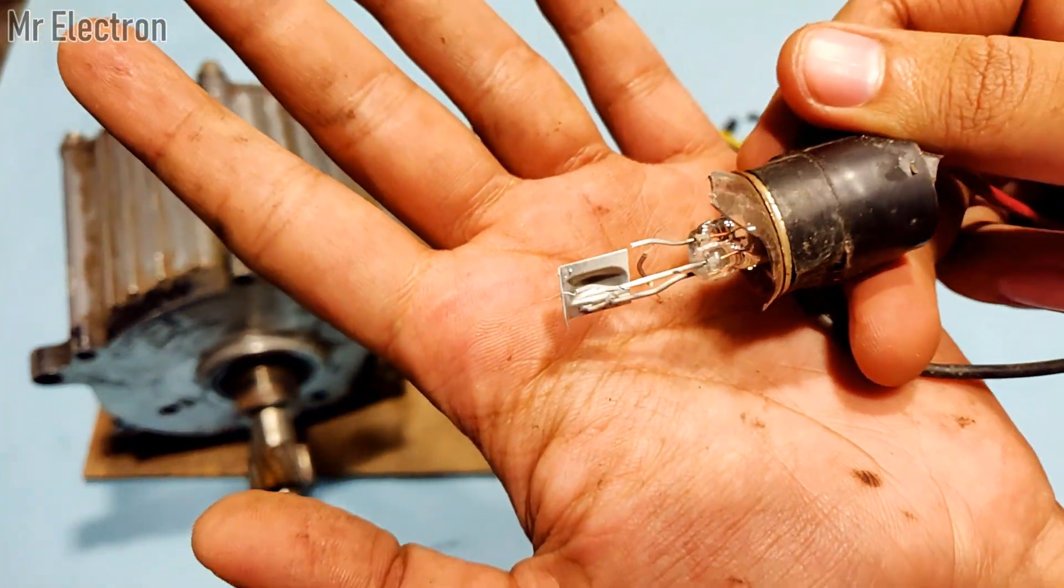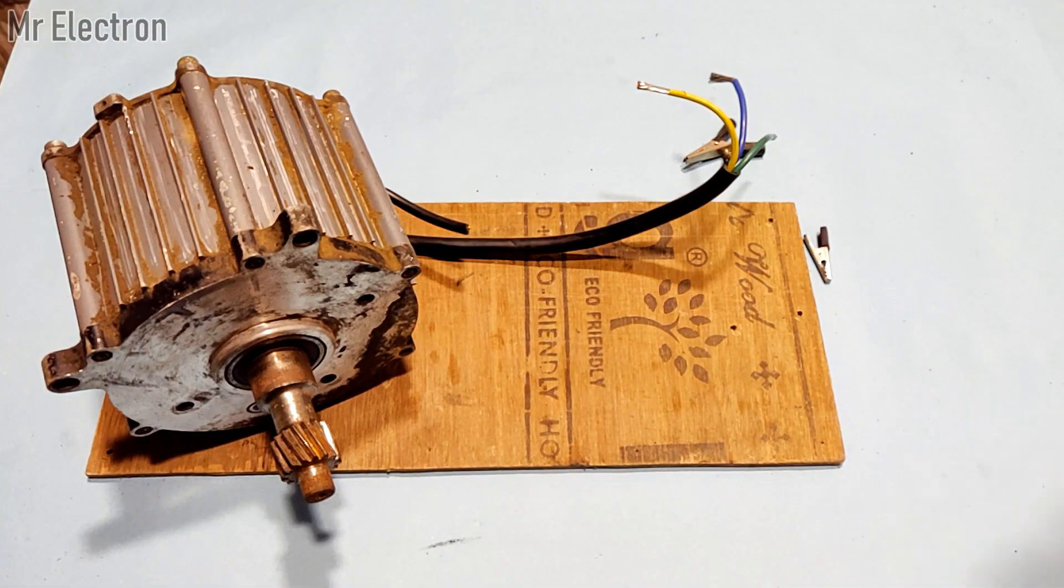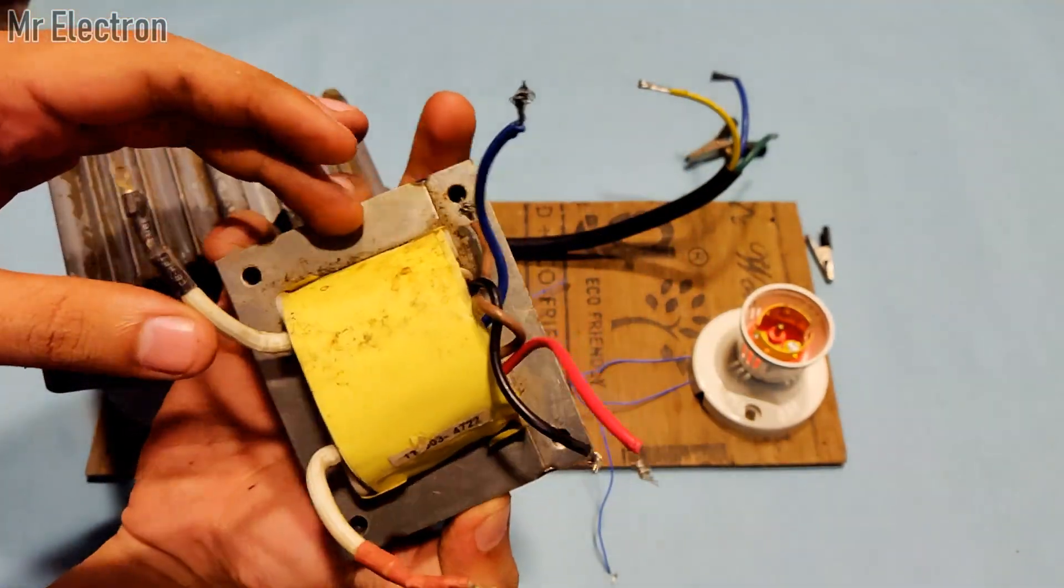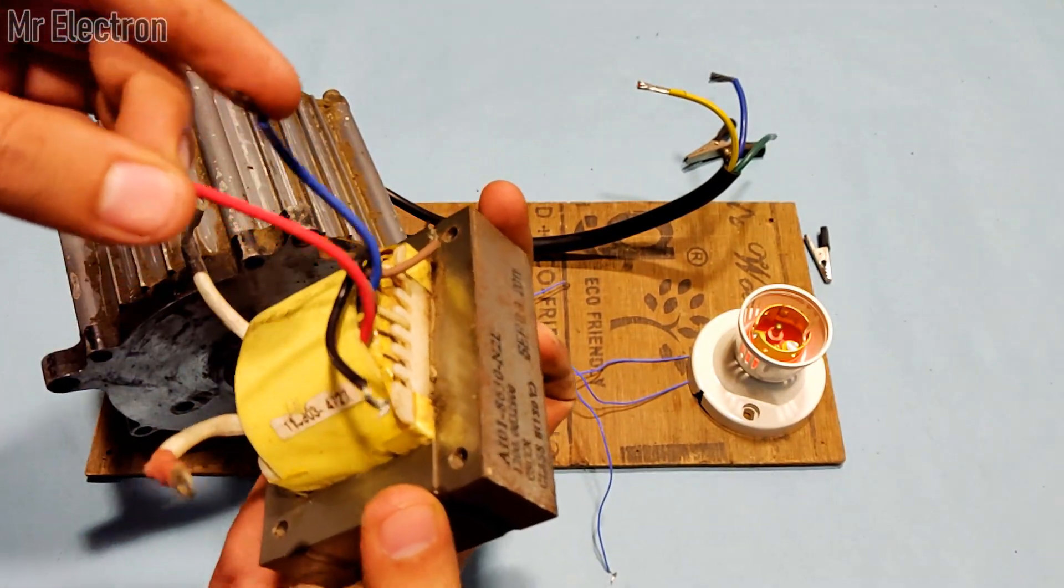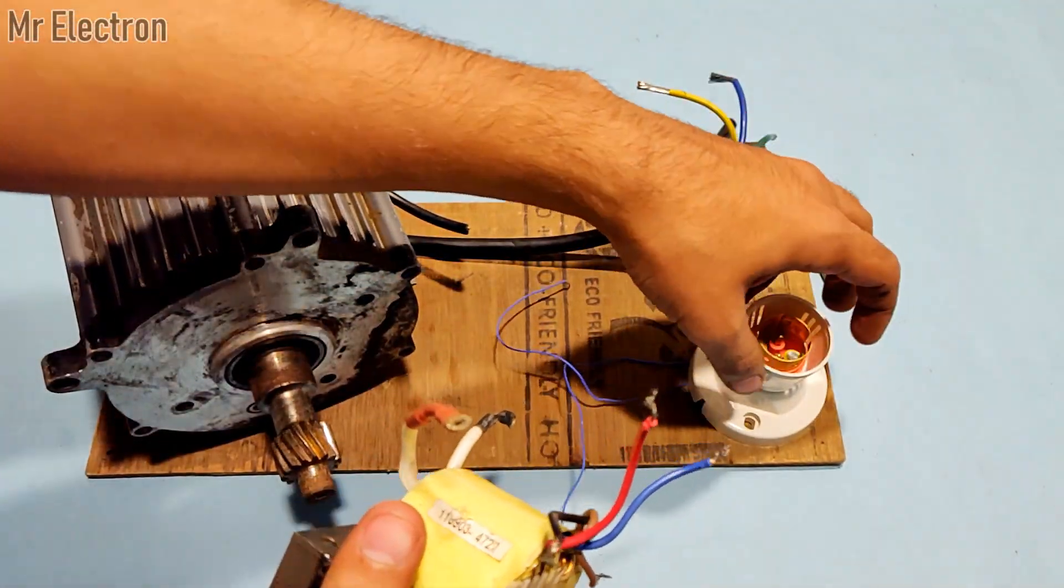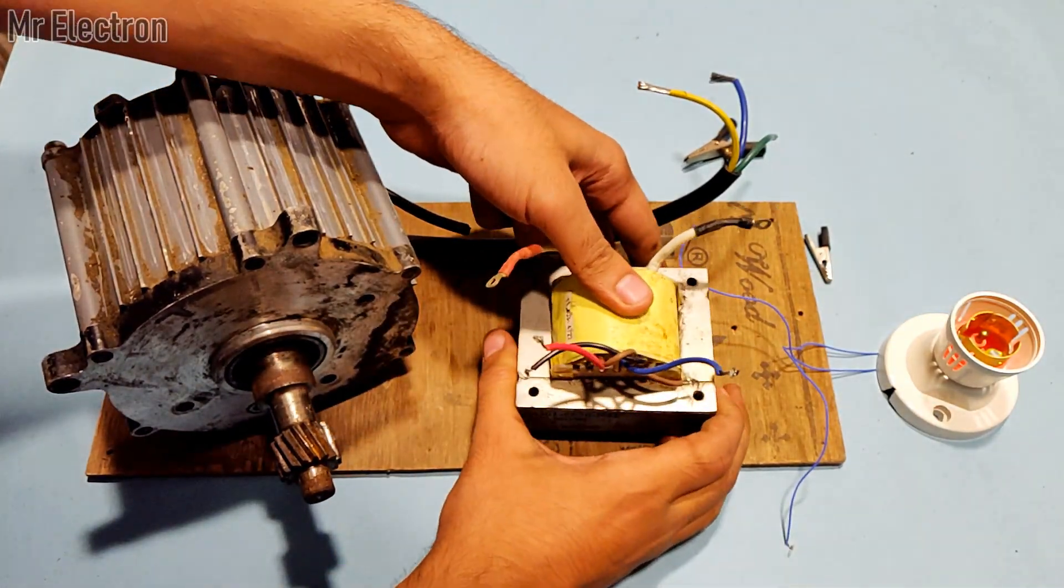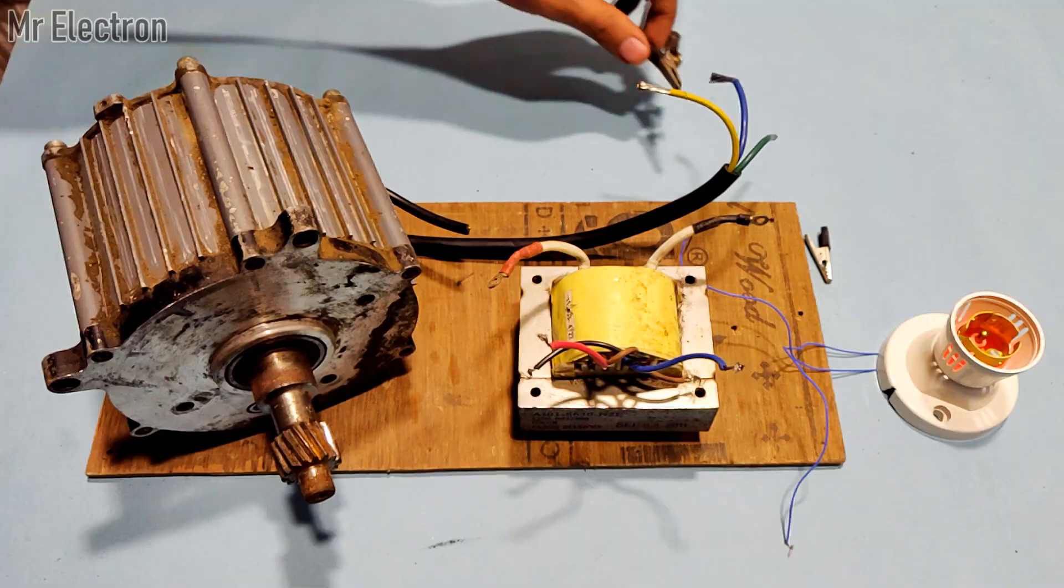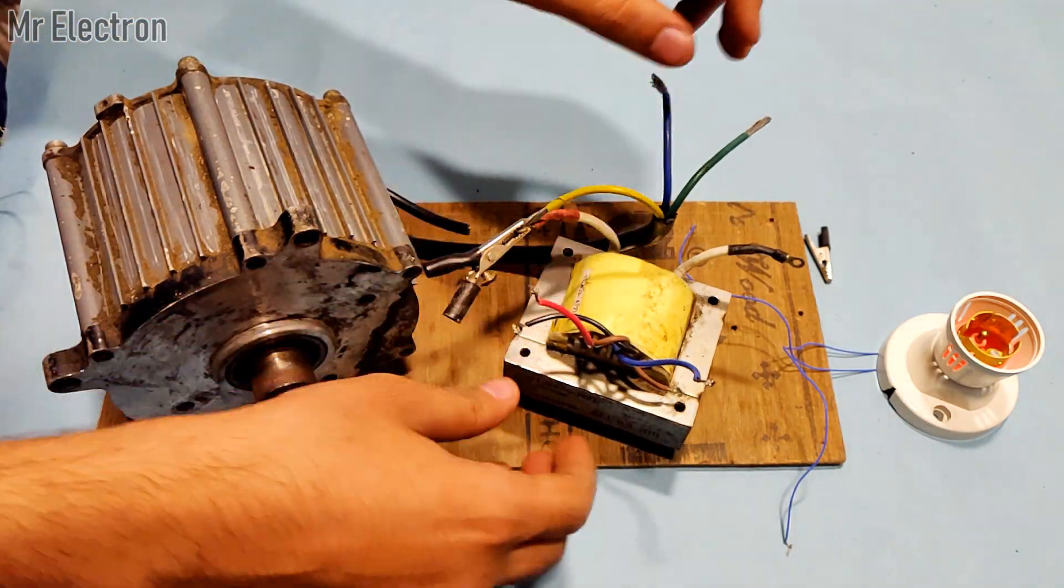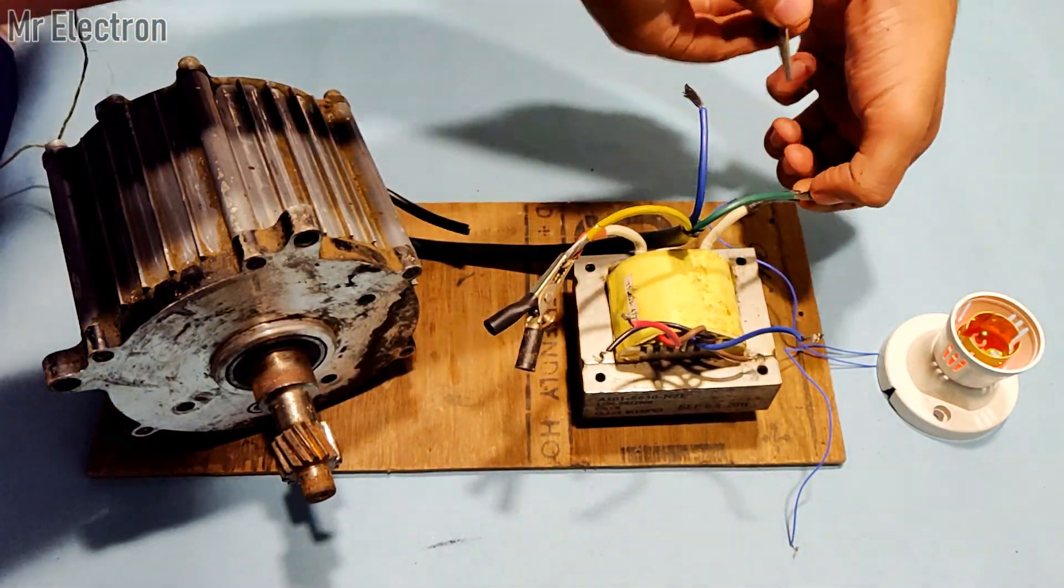Now I'm going to use a 12 volts to 120 volts transformer to step up the generated output voltage of the BLDC motor. The transformer is single phase, so I'm going to connect any two terminals from the BLDC motor to the thick winding, which is the primary winding, and to the secondary winding, which is the high voltage winding 120 volts, I will be connecting a holder.